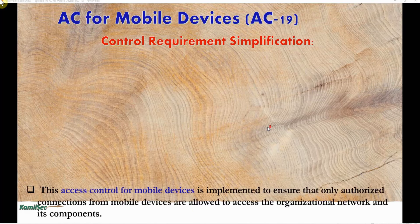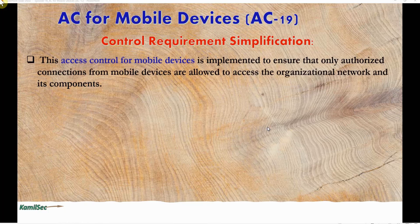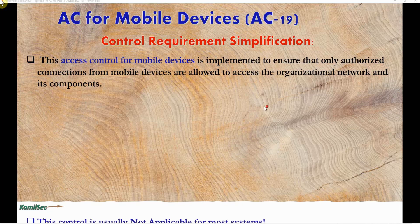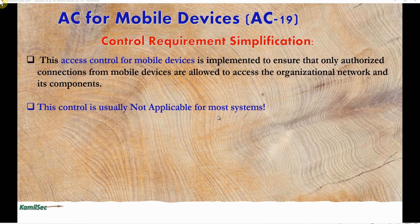Now let's look at the control requirements simplification. This access control for mobile devices is implemented to ensure that only authorized connections from mobile devices are allowed to access the organizational network and its components. This control is usually not applicable for most systems. When going through your SSP or preparing for a security control assessment, note that AC-19 is, for the most part, not applicable unless your system has functionality that requires mobile devices to be incorporated.